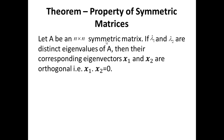Another theorem — a property of symmetric matrices: Let A be an n-by-n symmetric matrix and lambda 1, lambda 2 distinct eigenvalues of A. Then their corresponding eigenvectors X1 and X2 are orthogonal. Two vectors are said to be orthogonal if their dot product equals 0, which is discussed in detail in chapter 5. What I want you to remember is that if A is symmetric and lambda 1 and lambda 2 are distinct eigenvalues, their corresponding eigenvectors are orthogonal.